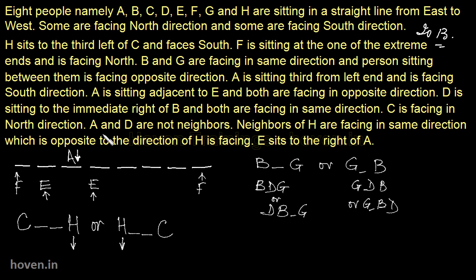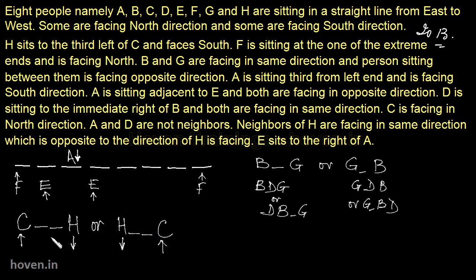C is facing in the north direction — this is very interesting. So we put an upward arrow for both possible C positions. We know the directions of C and H. Going back: H sits to the third left of C, so C can't be to the left of H — that would make H to the right. We cross that out, so the H-C arrangement is now confirmed. Next, A and D are not neighbors — we will verify it later.